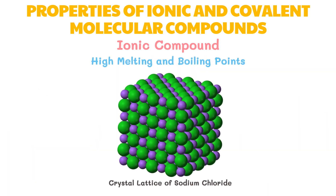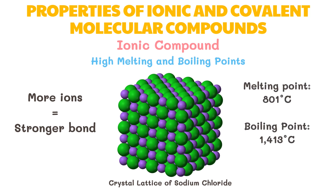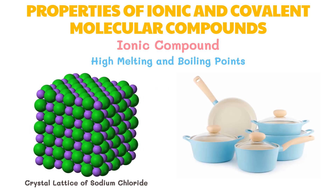Ionic compounds have very high melting and boiling points. The ions in a crystal lattice are closely packed together, creating a strong electrostatic force of attraction between them. The more ions there are in a crystal structure, the stronger the ionic bond, and therefore a large amount of energy is required to overcome these bonds. For example, table salt melts at 801°C and boils at 1413°C. Ceramics, which are made of ionic compounds, are an effective heat-resistant material suitable for cookware.